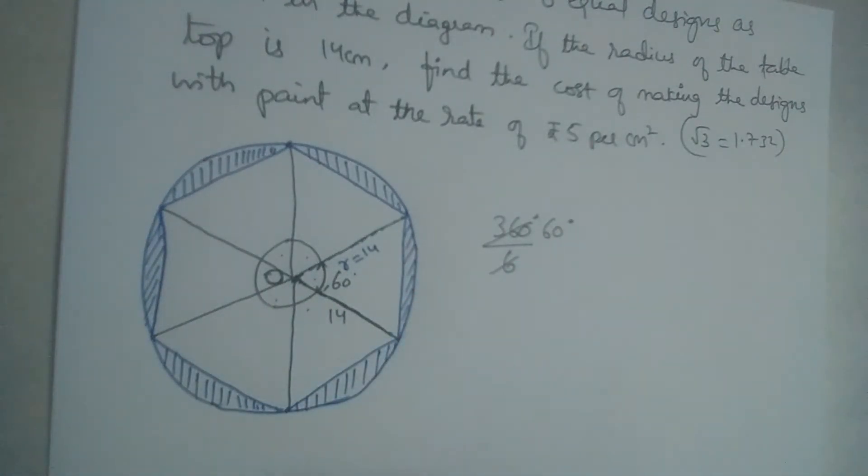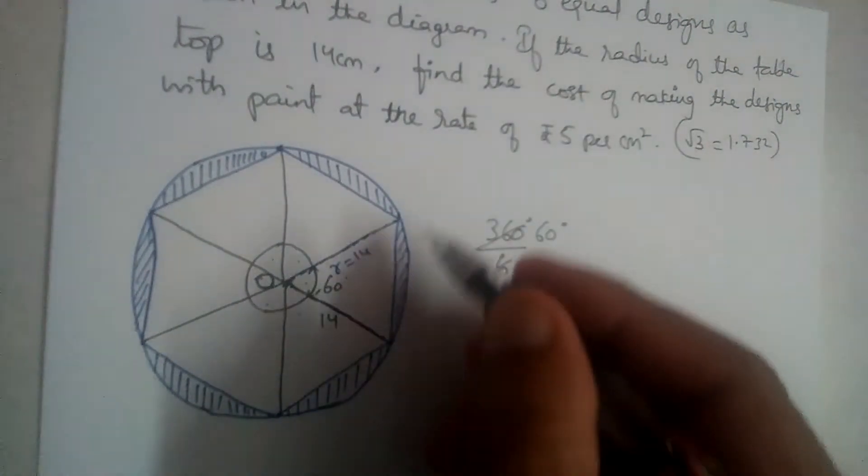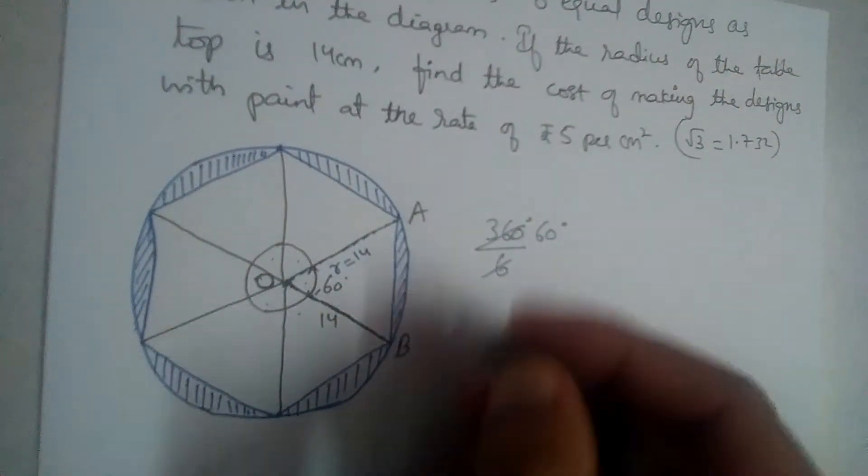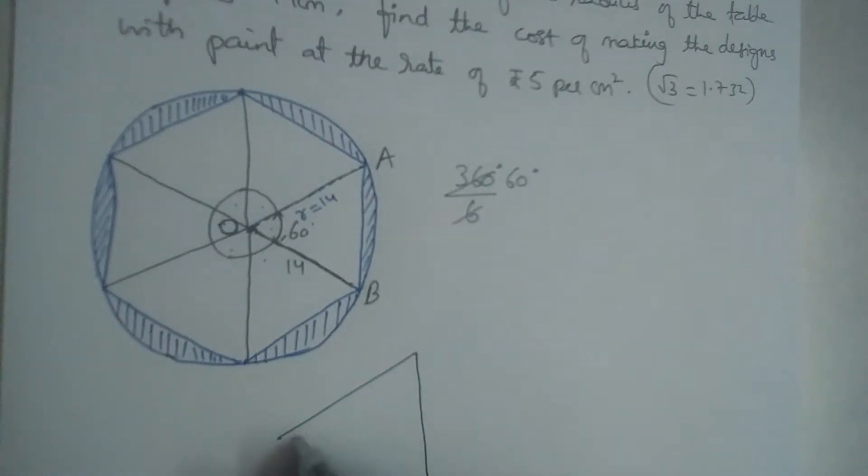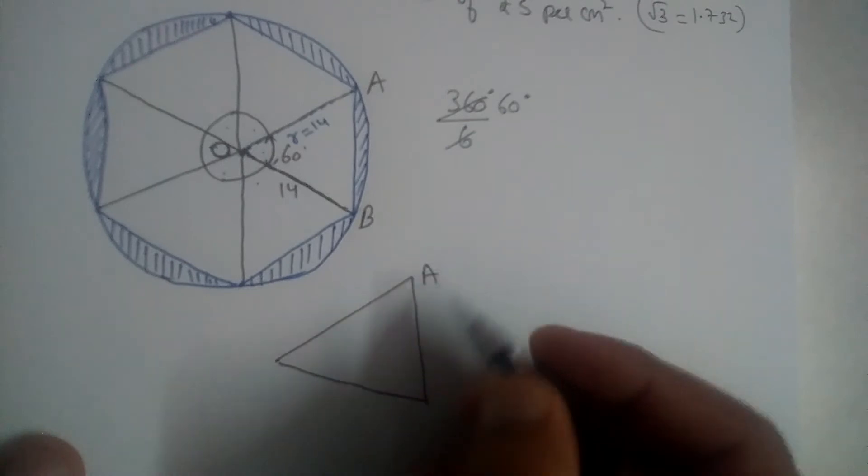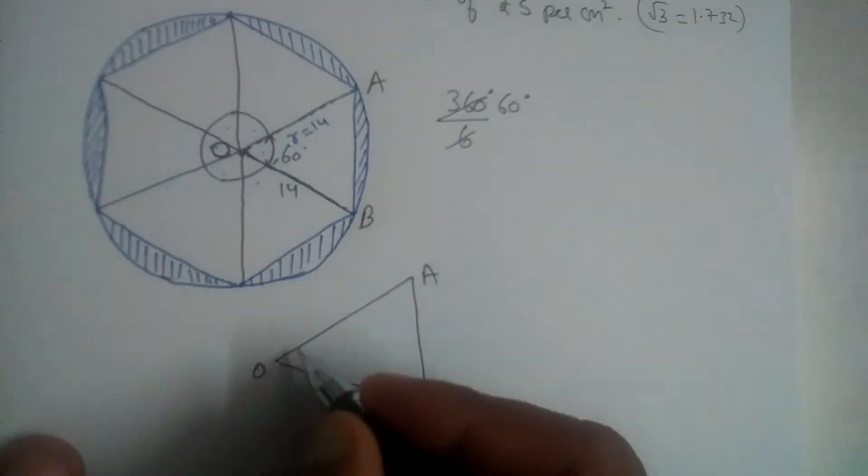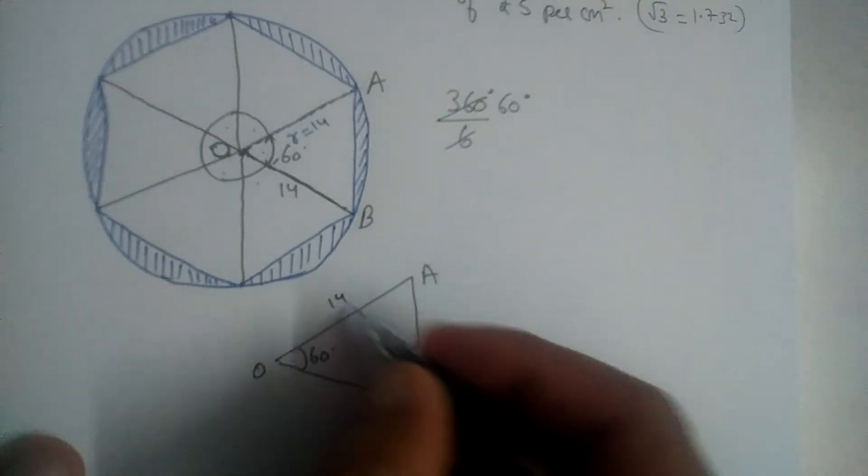And if you take this chord as AB, we will have a triangle like this: AOB. And this is 60 degrees, and this is 14, and this is 14.